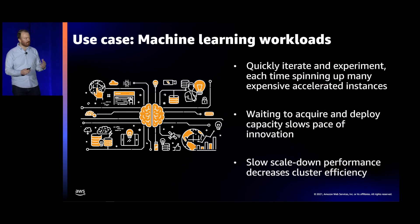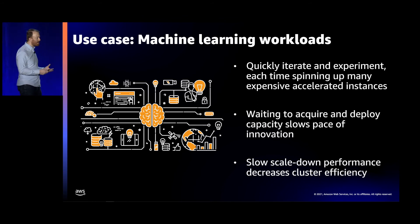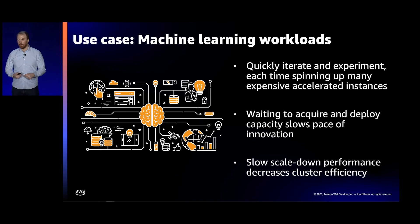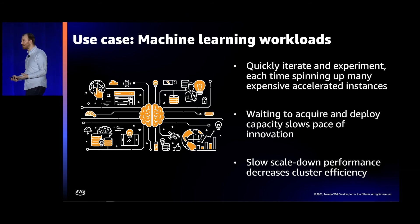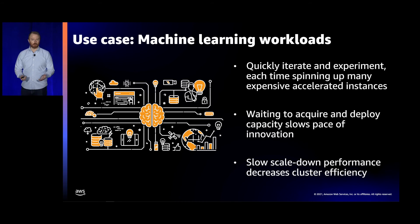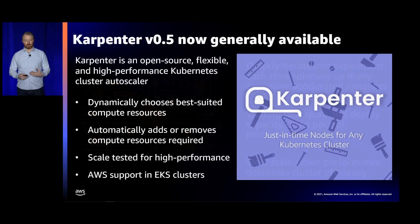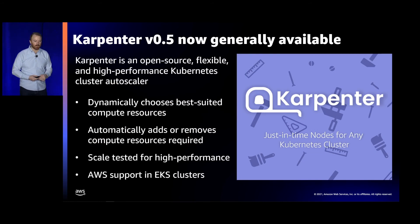Customers told us they had challenges getting the capacity they needed at the speed they needed it, slowing the pace of innovation. Releasing that capacity back also cost them more money than needed while jobs had already finished. With these use cases and challenges in mind, we set out to build Karpenter, which I can happily announce today is now generally available at v0.5. Karpenter is an open source, flexible, and highly performant Kubernetes cluster autoscaler. While similar in some ways to the Kubernetes cluster autoscaler, one key difference is that Karpenter will dynamically choose the best EC2 instance types or compute resource types for the workloads coming into your cluster. It adds and removes capacity from the cluster as needed, and is scale-tested for the kind of high performance we've been talking about during this session.